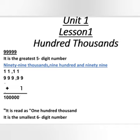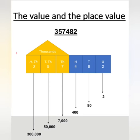999,999 plus 1: starting from the units, 9 plus 1 equals 10 — write zero and carry one. Then 1 plus 9 equals 10, write zero and carry one. This continues for each digit, and the result is 100,000 — the smallest six-digit number.